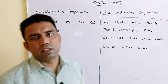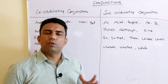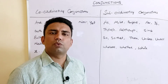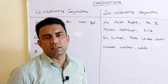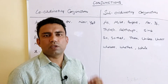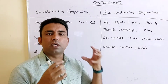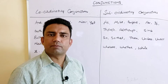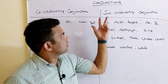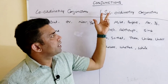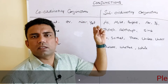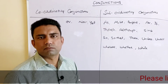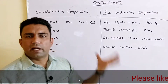Let's come to conjunctions. What are conjunctions? Conjunctions are words which are basically also called connectors. Connectors means words which are going to connect two clauses or sometimes two sentences. Conjunctions are divided into two parts: coordinating conjunctions and subordinating conjunctions.